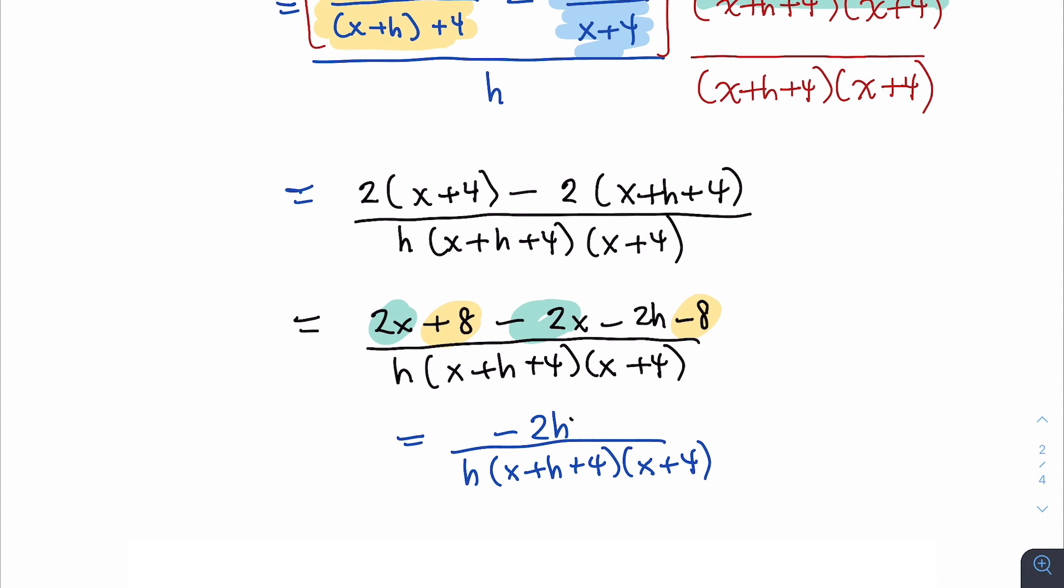And as luck would have it, now that common factor of h goes away. So we have, as our final answer, negative 2 all over (x+h+4) times (x+4). And that is the simplest version of our difference quotient.